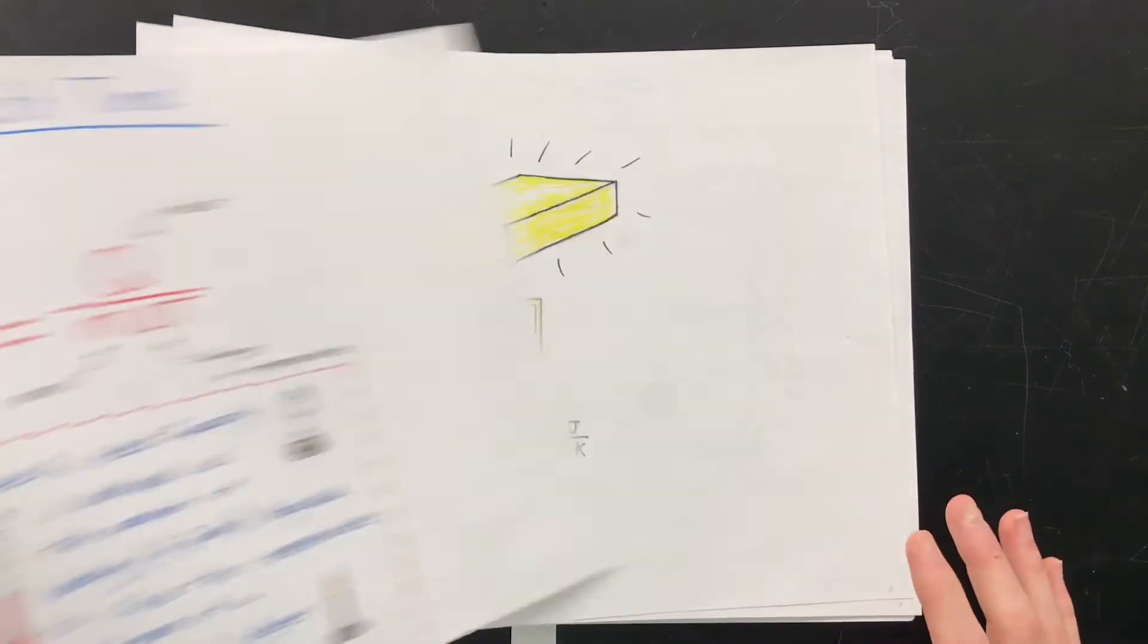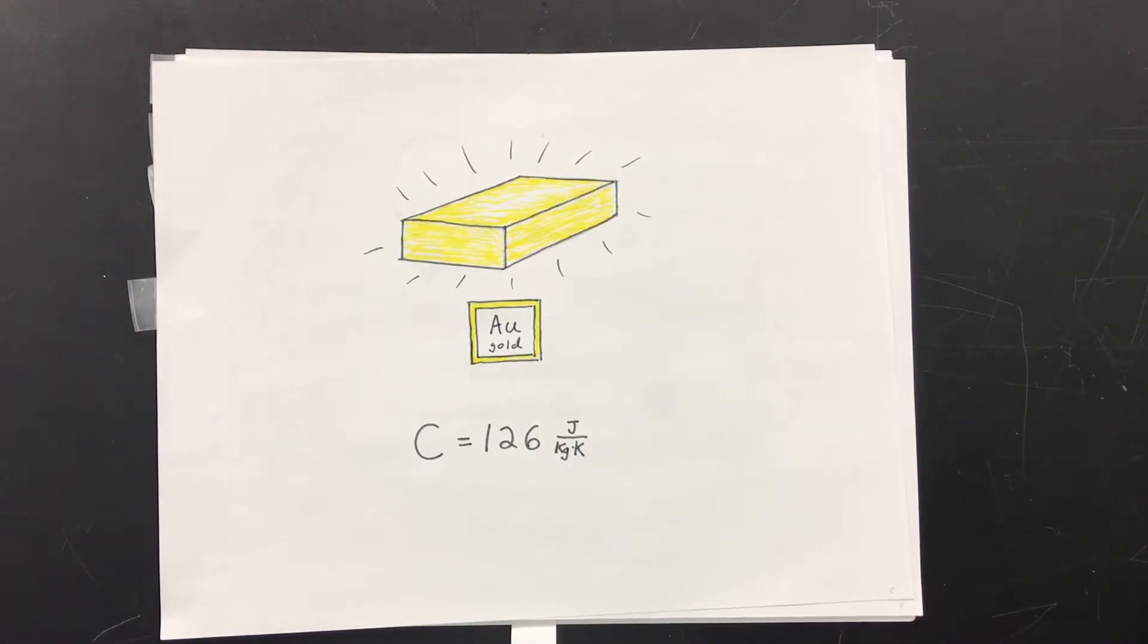For example, pure gold has a specific heat capacity of 126 joules per kilogram Kelvin, meaning that it takes 126 joules of heat to raise a kilogram of pure gold by a single degree Kelvin.